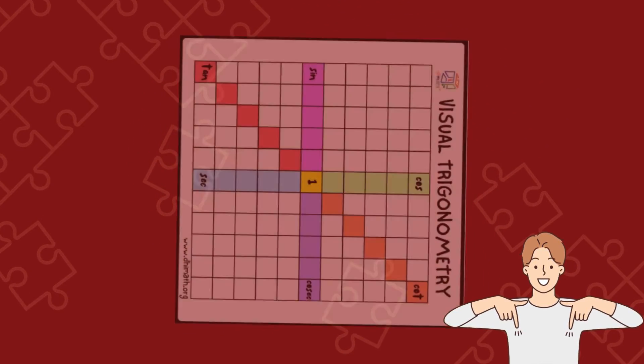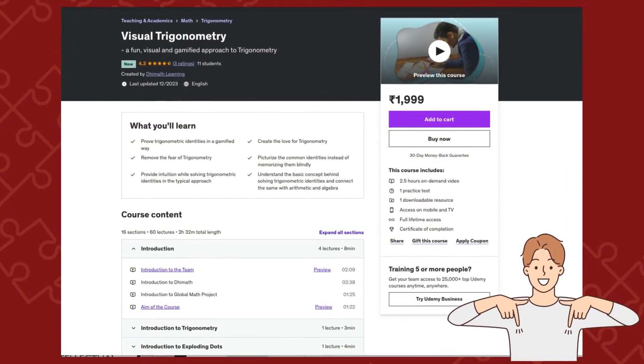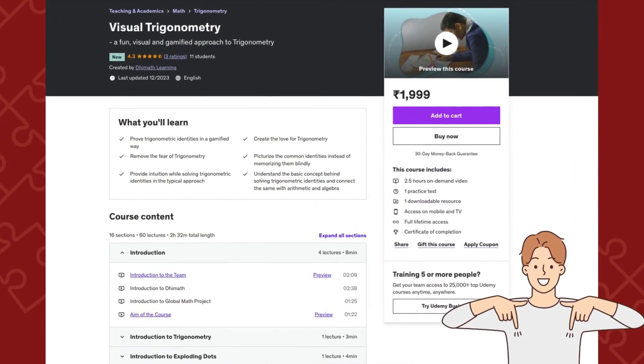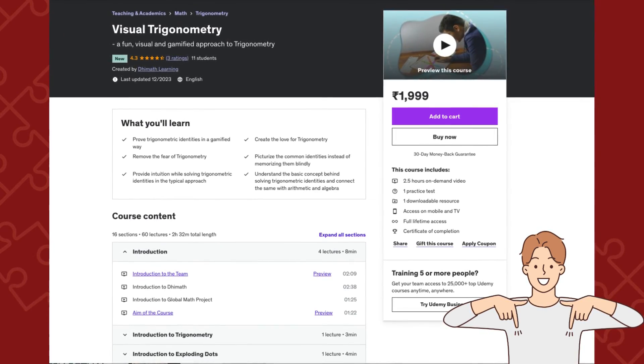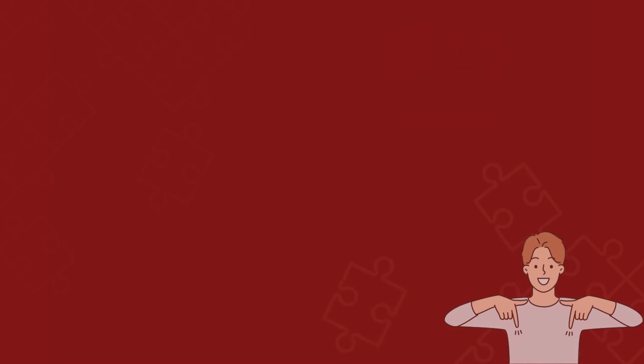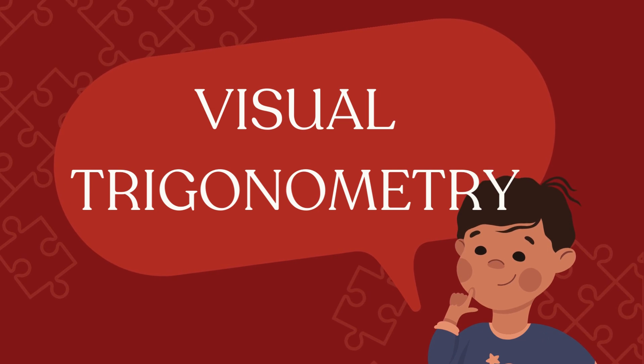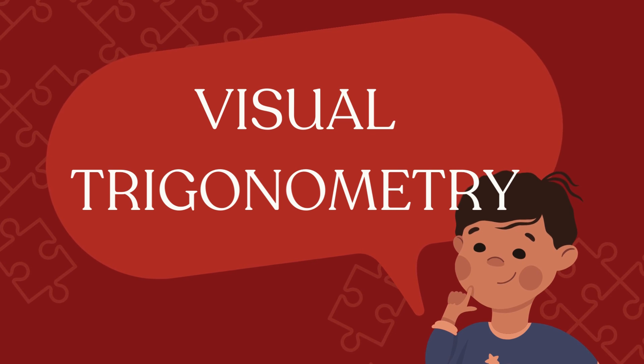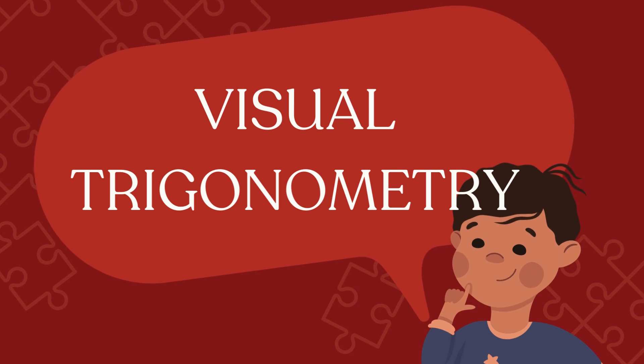We also have a detailed course on Udemy that explains the concepts with 45 worked-out examples. The link for the Udemy course is in the description. In a limited period offer, the Udemy course comes free along with the board game. What are you waiting for? Drive away the fear of trigonometry in students and make them fall in love with it with the Maths Revolutionary Visual Trigonometry Board Game.